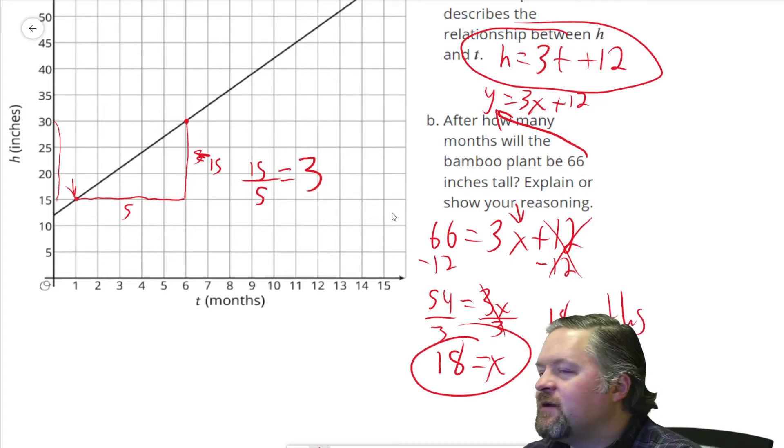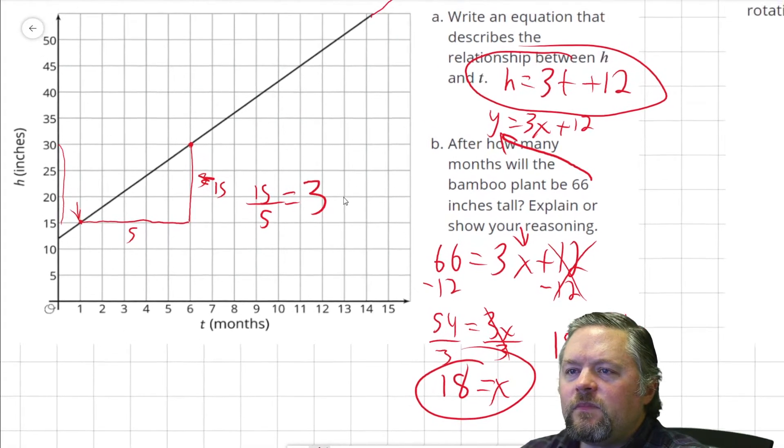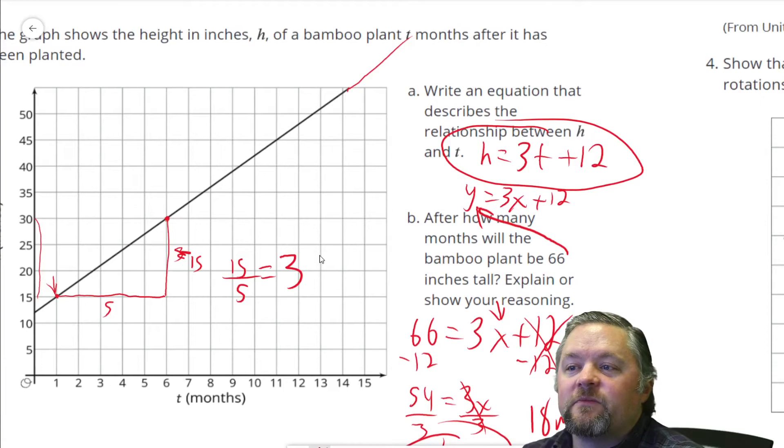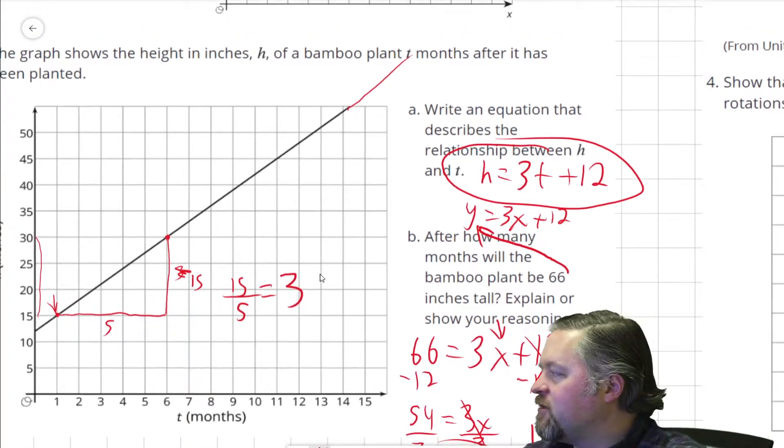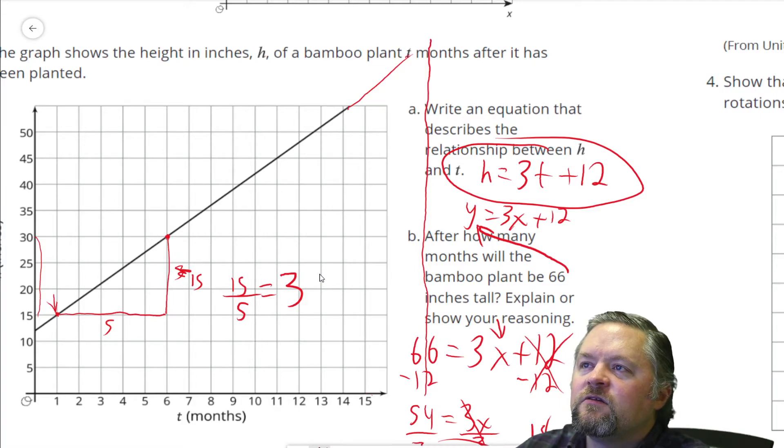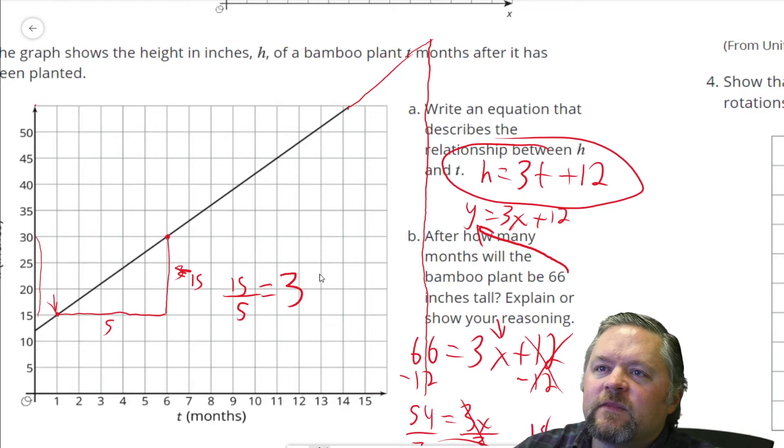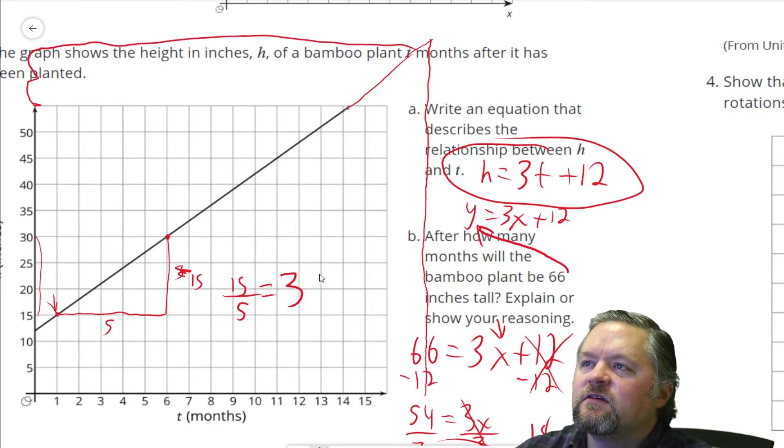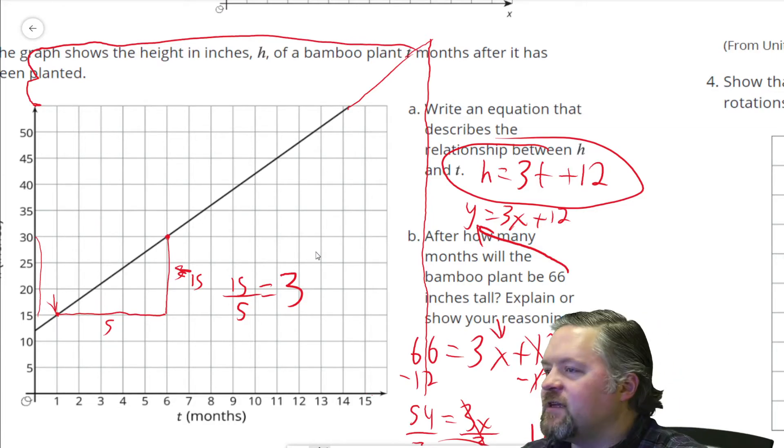18 months. Now because I like to know if my answer makes sense, I'm going to look at this graph over here. 15, 16, 17, 18 would be here-ish. And we're looking for 66. Each one of those is five, so that's 55, 60, 66. Yeah, that answer makes sense.